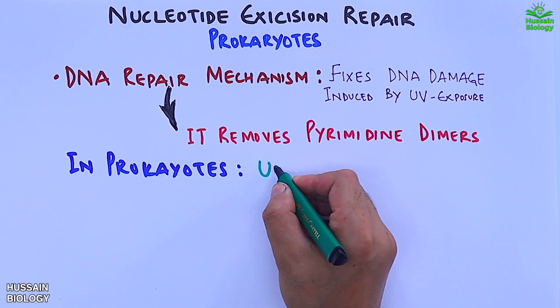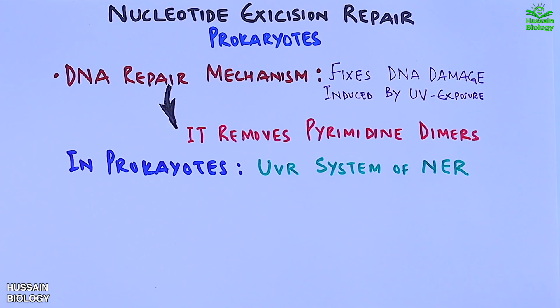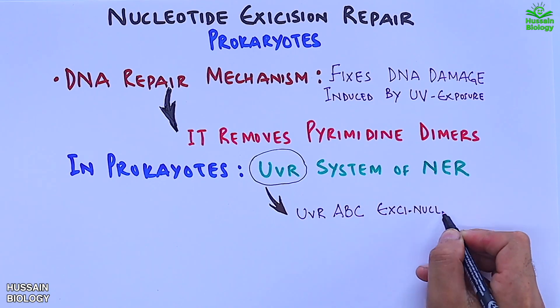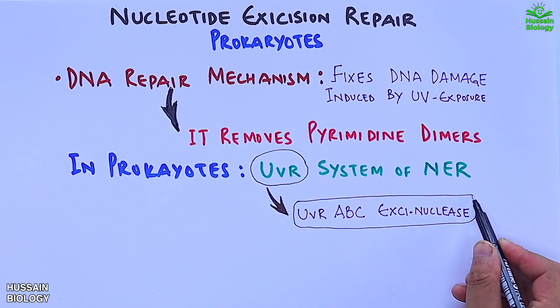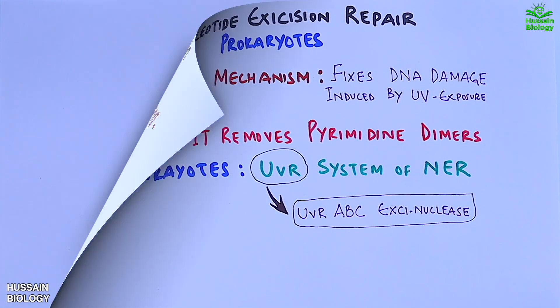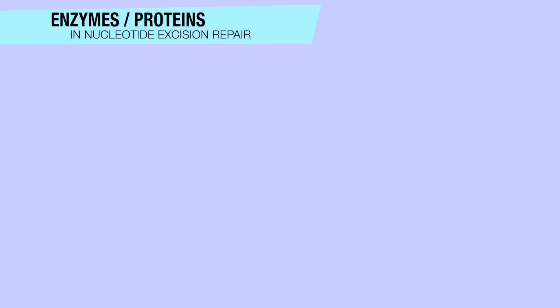In prokaryotes we have the UVR system of NER where we have the UVR ABC exonuclease complex which fixes the damage. First of all let's see the enzymes or proteins taking part in it.